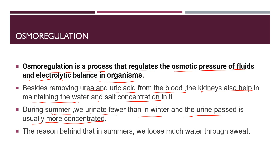The kidneys play a role in osmoregulation by regulating the electrolytic balance in our body. In summer, when we sweat profusely, the kidneys produce less, concentrated urine so that the water balance in the body is maintained. In winter, when we are not sweating, the urine passed is more in quantity and is dilute in nature. So in summer, concentrated urine is produced to maintain electrolytic balance, whereas in winter, the urine is dilute and more in quantity.